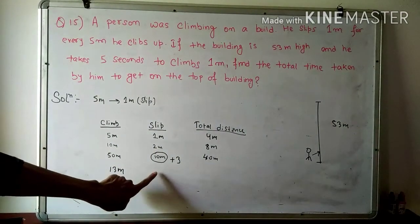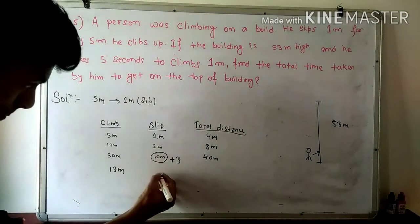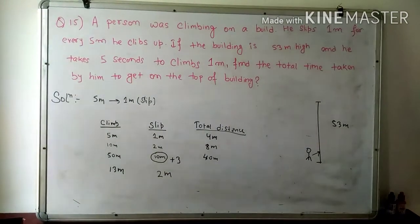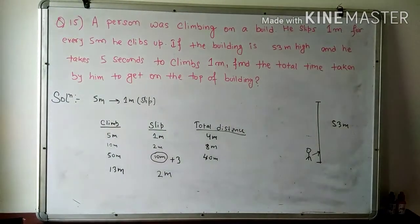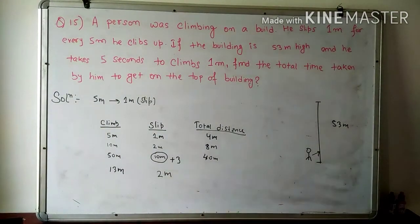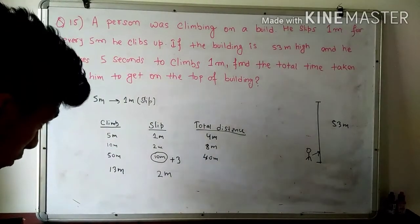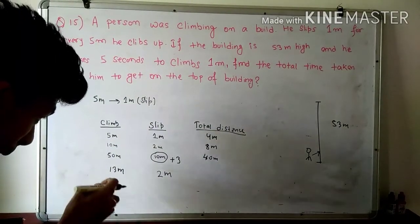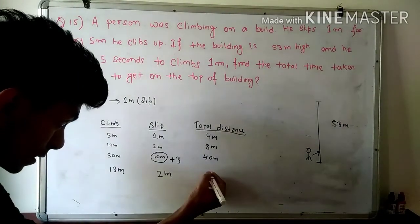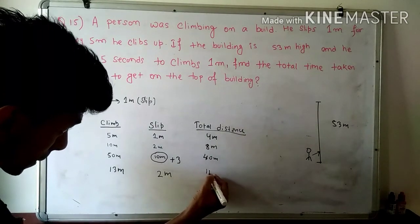So how many meters will you cover? 2 meters. When you cover 2 meters, then how many meters net? This is 11 meters. Look at this carefully.